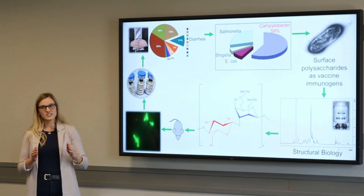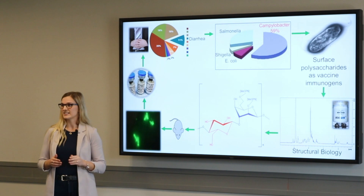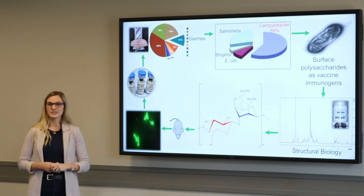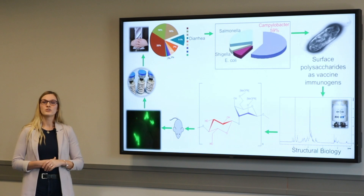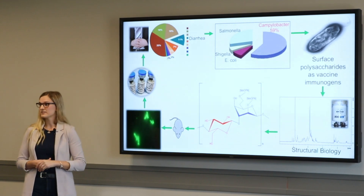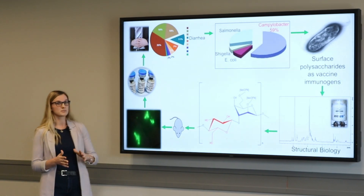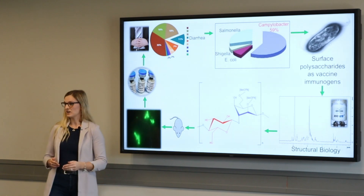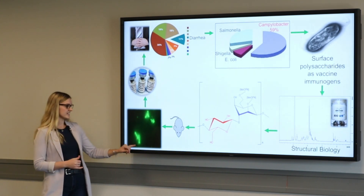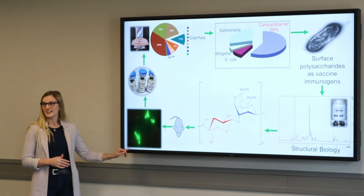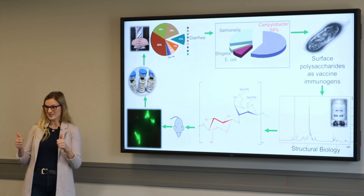Once I know the structure of my polysaccharide, I can generate my vaccine. And once I've done this, I send the vaccine to our collaborators who do a series of tests to determine if the vaccine stimulates an immune response in animal models. Here we can actually see antibodies recognizing the bacteria, which means that the vaccine was successful.